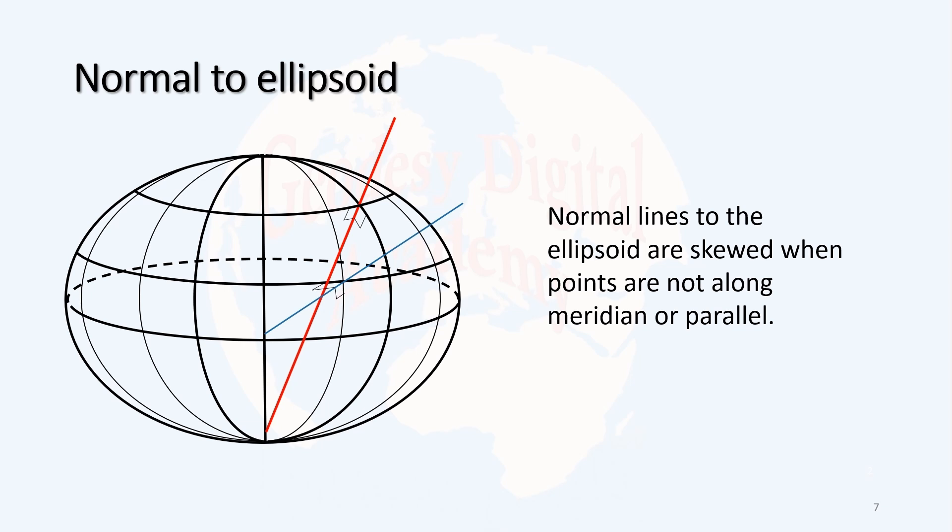You simply say that the normal lines to the ellipsoid are skewed when the points are not aligned on a meridian or parallel.